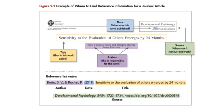A full citation typically includes the author, the date, the title of the work, and the source, or information about where you can get it, including any URLs or other links. In this style, each part of the citation is separated with a period.